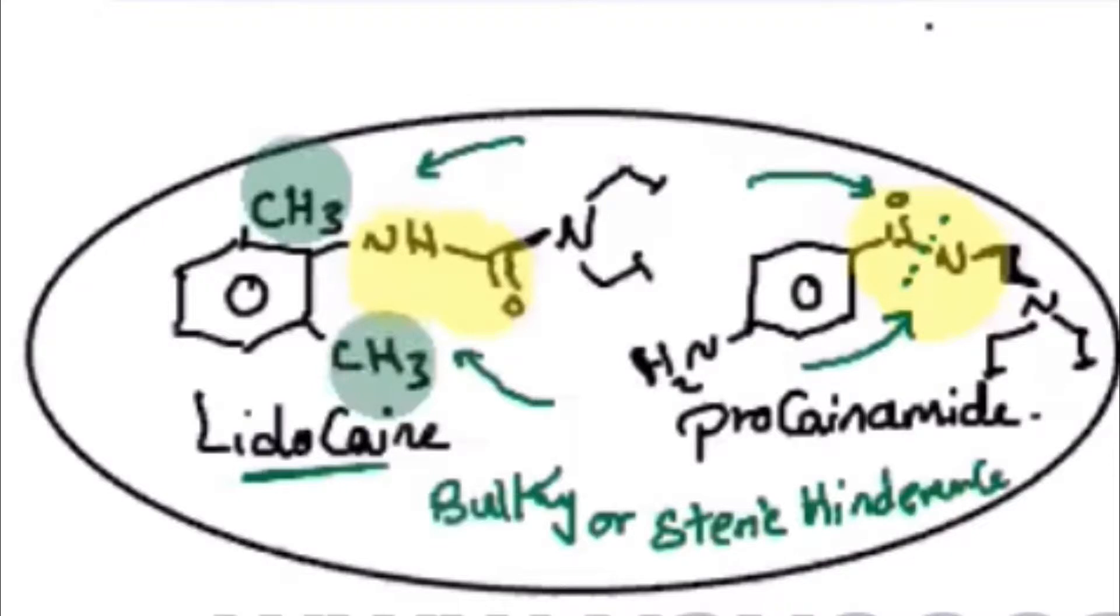And the other, which is that bulky around the function group that will be metabolized. Okay, so the bulky can make steric hindrance, can be crowding at the place, so the enzyme can't reach to the function group easier. It will take longer time.